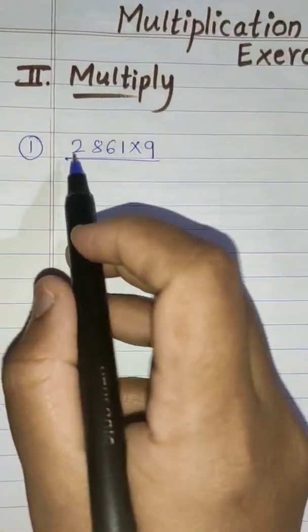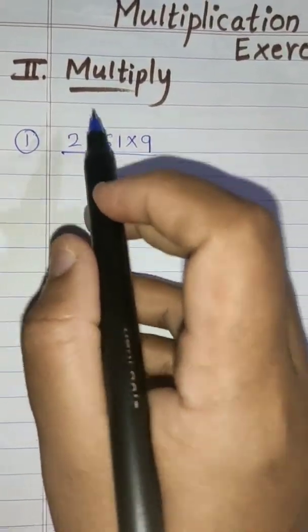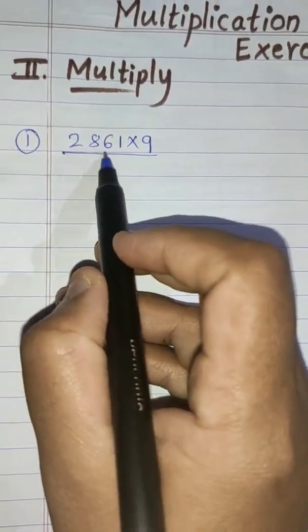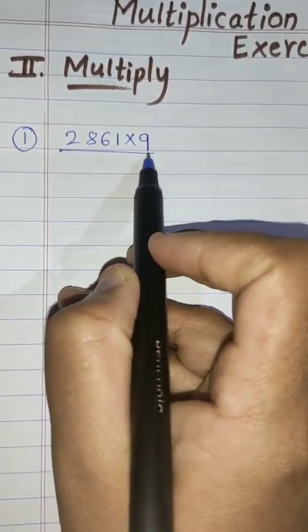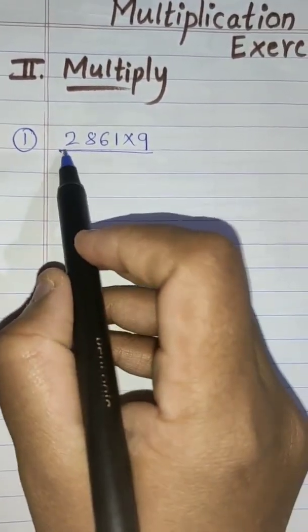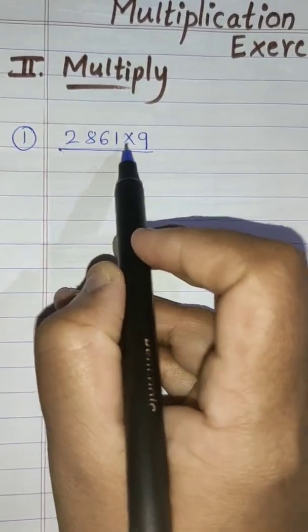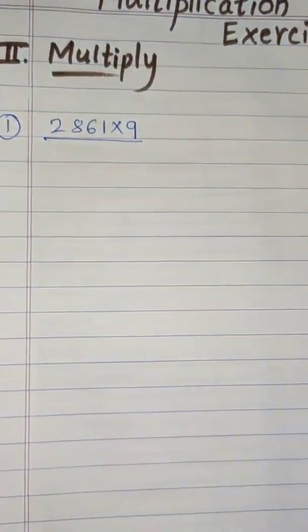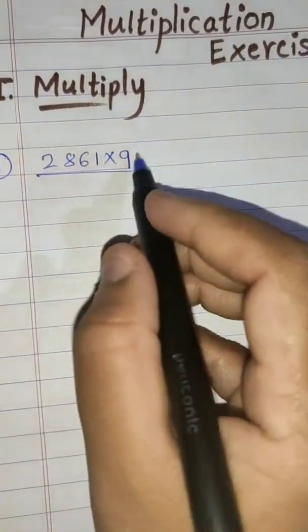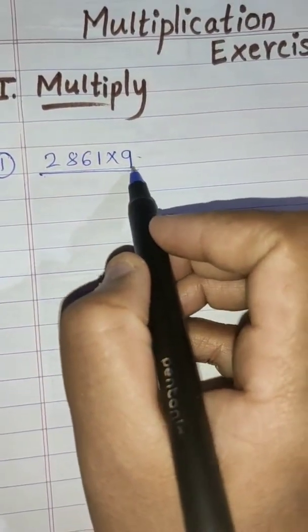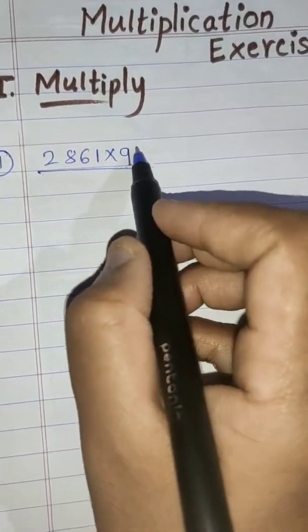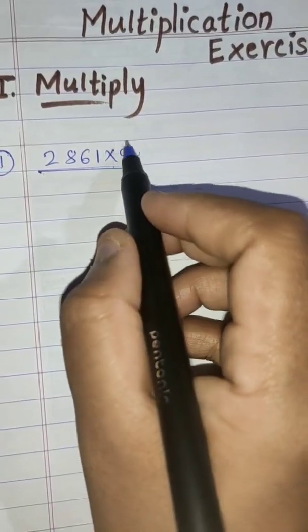Here I have written the example: 2861 into 9. You have to multiply this four-digit number by a one-digit number. Let's do it — it's very easy, you have done it before. Here there is no place like tens or hundreds, so directly we have to work with this number.